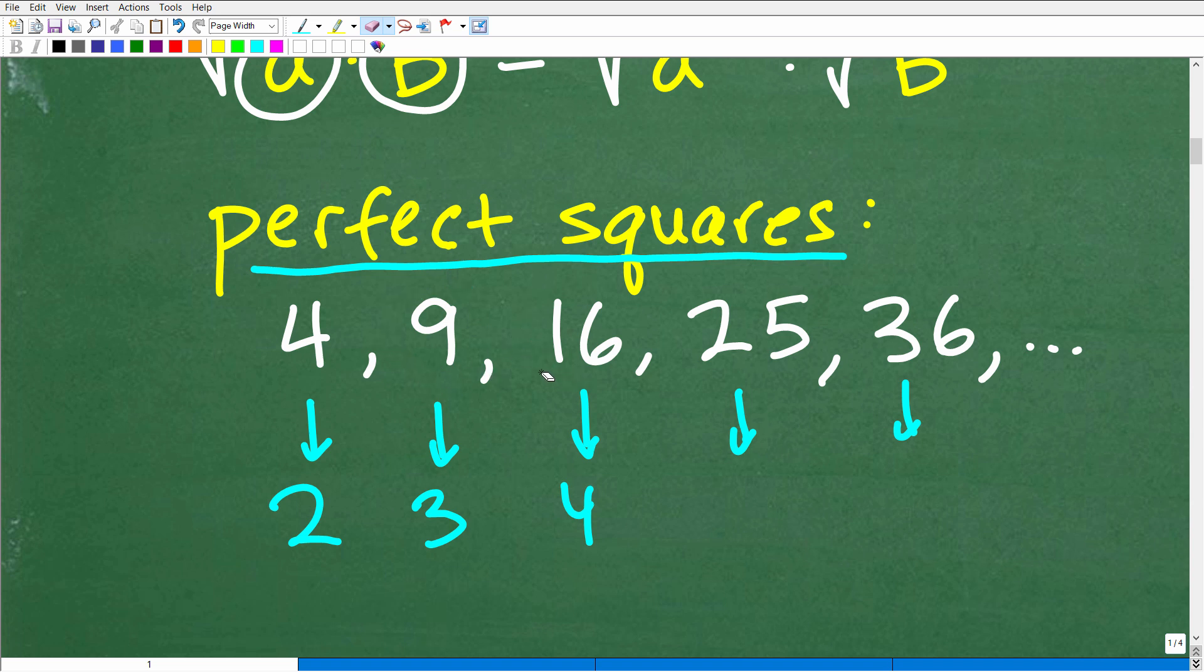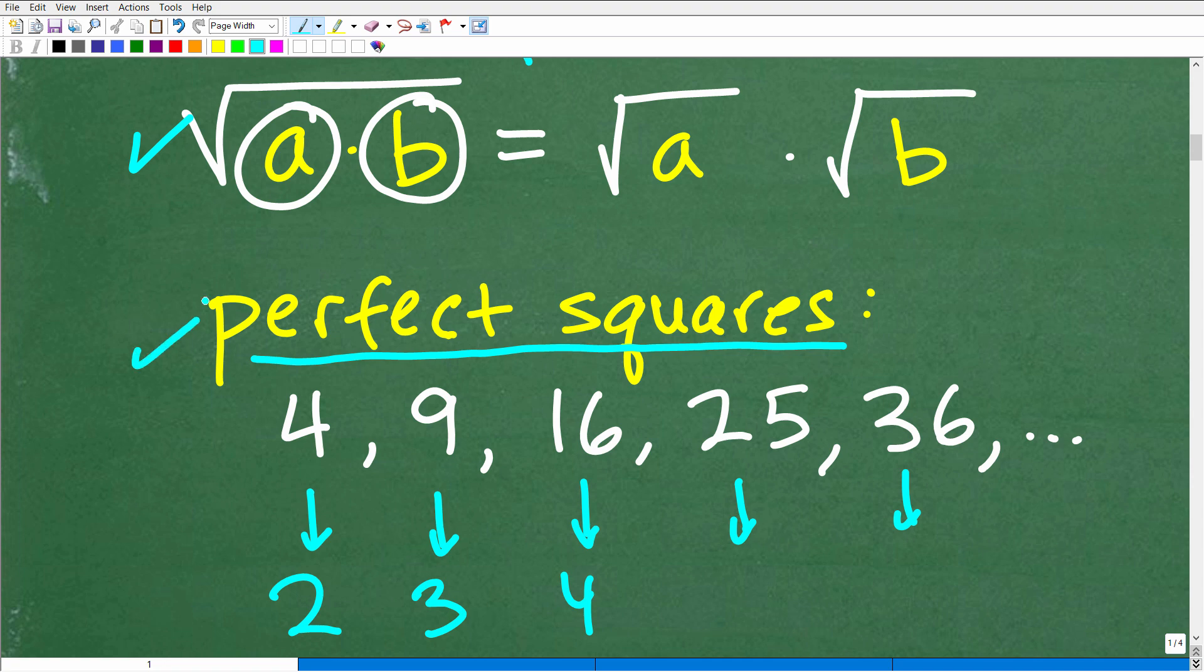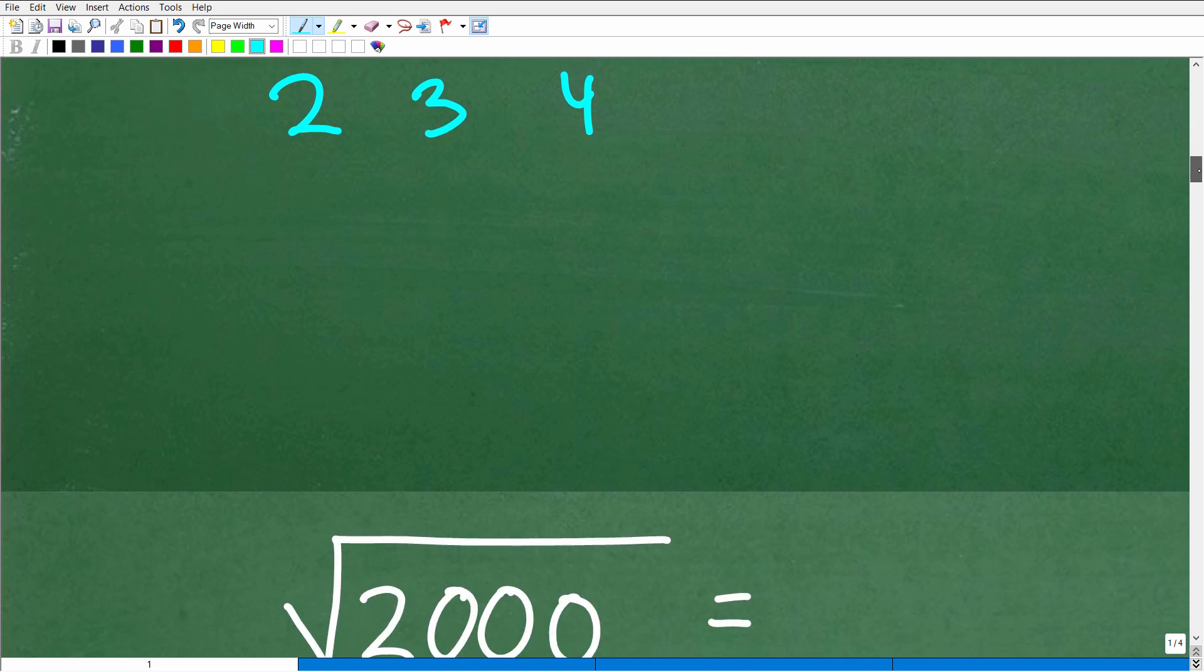So we're on the lookout for these factors here, 4, 9, 16, 25, and this goes on and on and on. So between this property right here and having an understanding of perfect square factors, we can go ahead and put this all together.